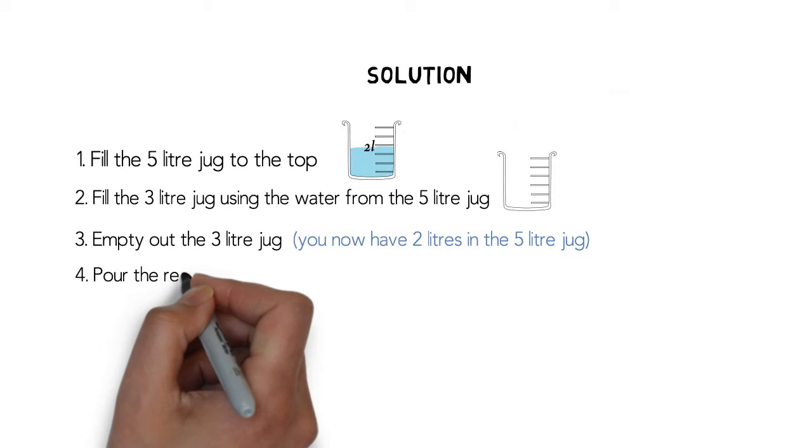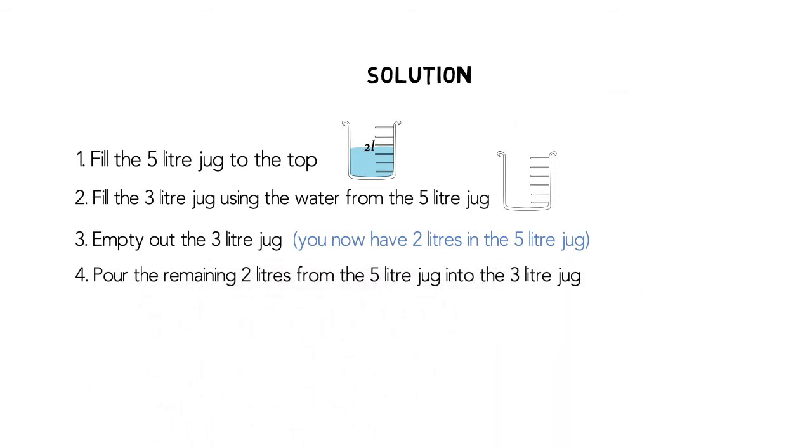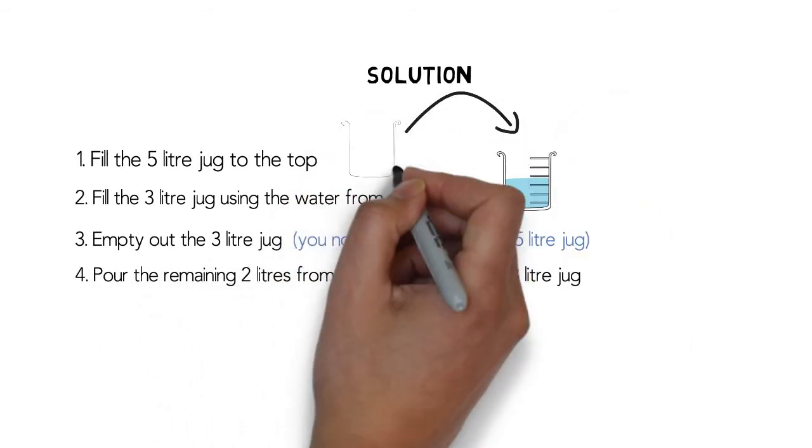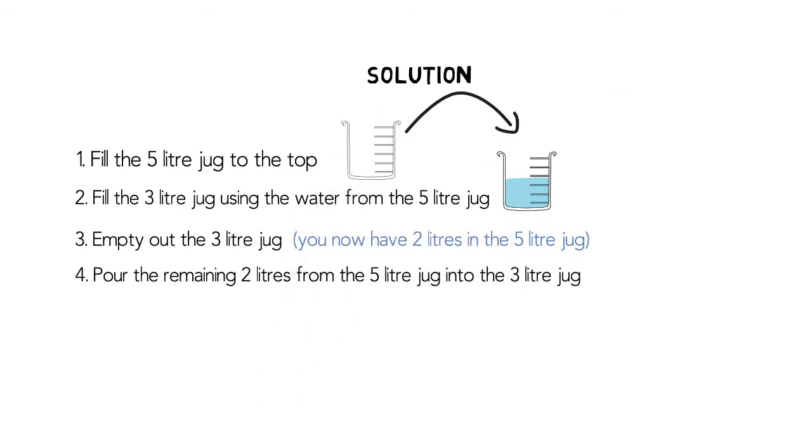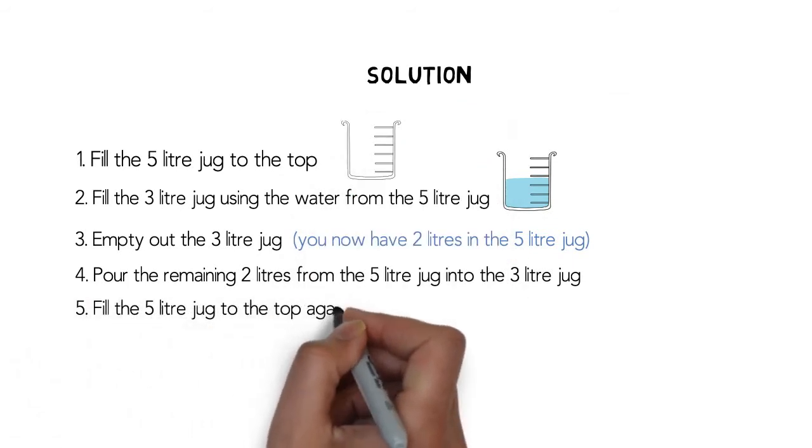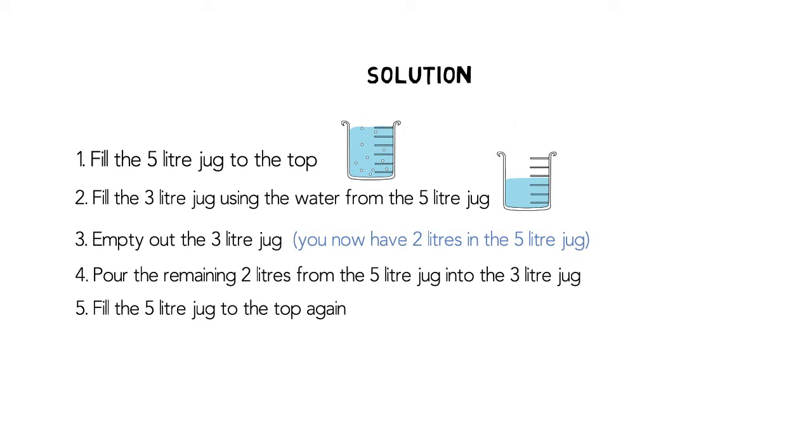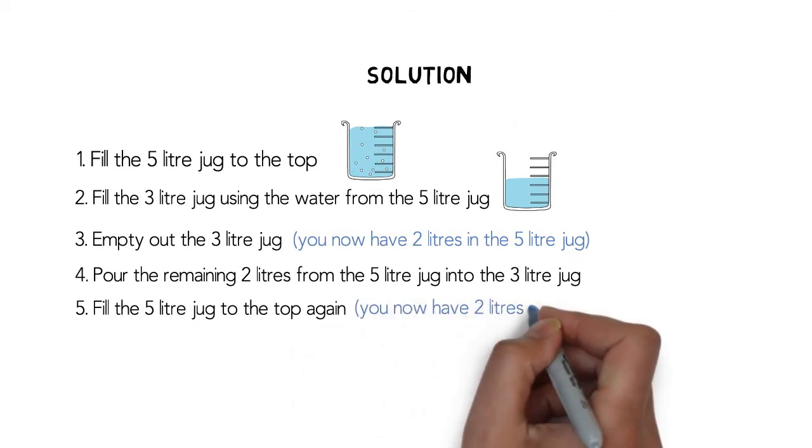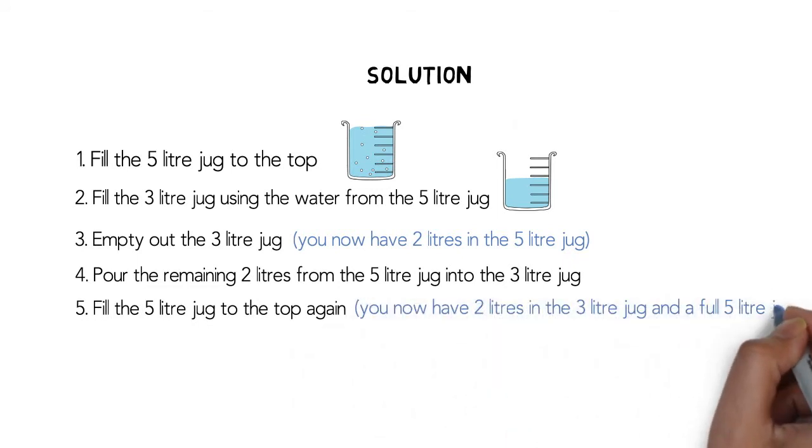Next, pour the 2 litres into the 3 litre jug, leaving you with space for 1 more litre in the 3 litre jug. Then fill the 5 litre jug to the top again. You now have 2 litres in the 3 litre jug and a full 5 litre jug.